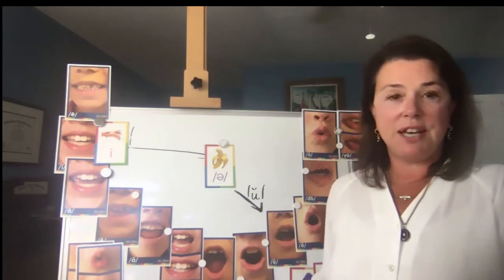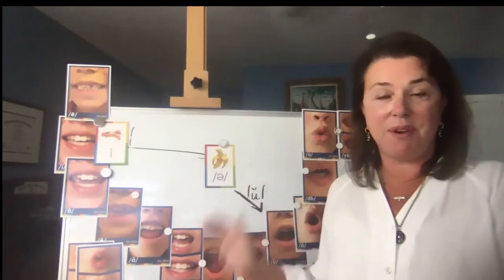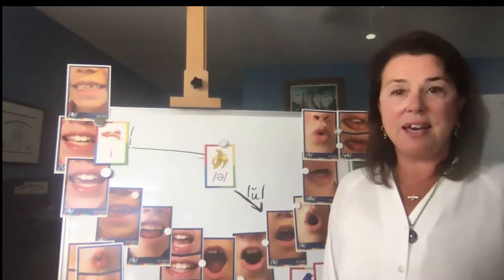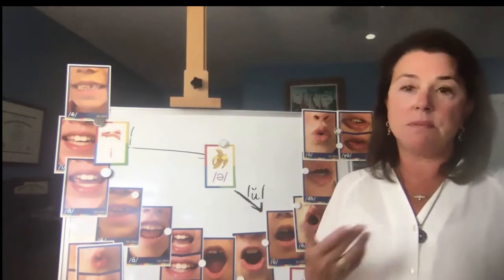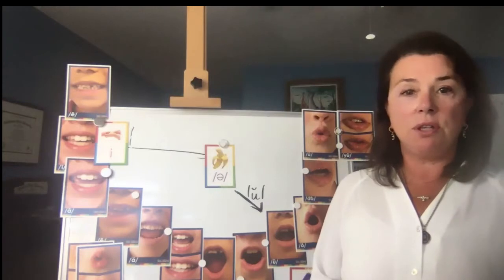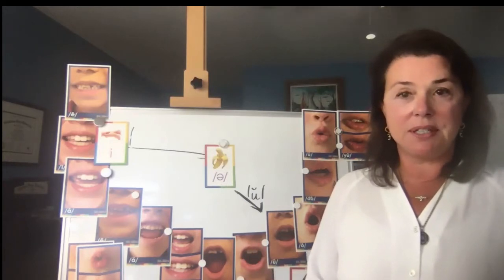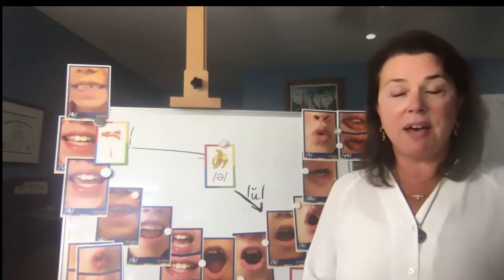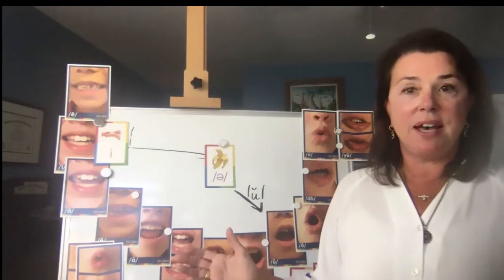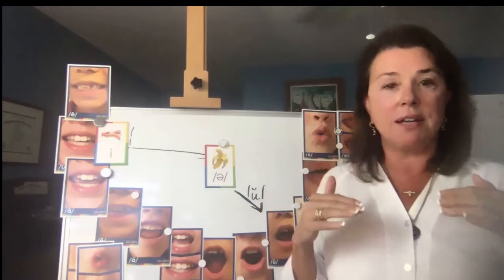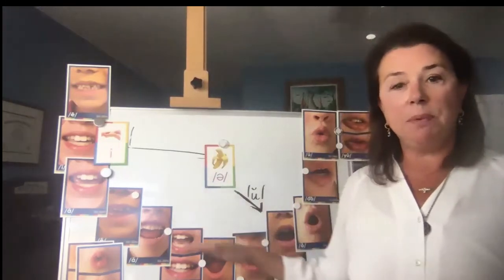I'm going to talk to you today about the vowel sounds in our English language. You're probably wondering what is this arrangement on the wall behind me — my little magnetic board. That's the arrangement of the vowel sounds in our language. We think of vowels as A-E-I-O-U and sometimes Y — the letter names — but we don't often think about the sounds that are represented. We have 18 vowel sounds in the English language, and this arrangement shows them by the opening of the mouth.